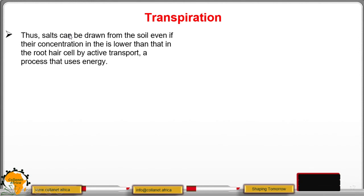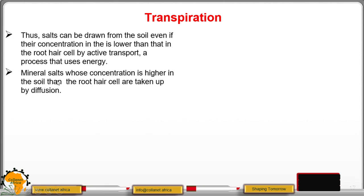Mineral salts can be drawn from the soil even if their concentration in the soil is lower than in the root hair cells, by active transport. This process requires energy. Mineral salts whose concentration is higher in the soil than in the root hair cells are taken up by diffusion. Note the difference between ions taken by active transport and those taken by diffusion.